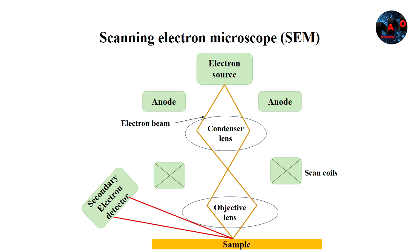High-resolution images are produced by SEM, revealing details of around 1 to 5 nanometers using the secondary electrons. The electron column has scanning coils, and the electron beam is passed through them to the final lens. This deflects the beam in vertical and horizontal directions so that it can perform raster scanning over the surface's rectangular area.